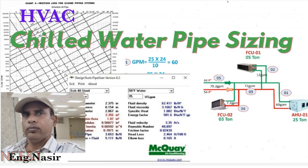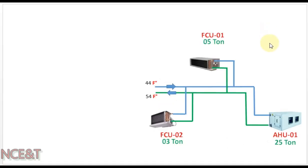In this video we will study how to select the chilled water pipe sizing. There are two ways of selecting the chilled water pipe size: number one by using the pipe friction loss chart, and number two by using the MACQA software. We have two FCUs — FCU1 and FCU2 — having capacities of 5 ton and 3 ton, and one AHU having capacity of 25 ton. All three equipment are connected by a chilled water piping network supplying at 44°F and returning at 54°F. We need to select the chilled water pipe sizing for this network.